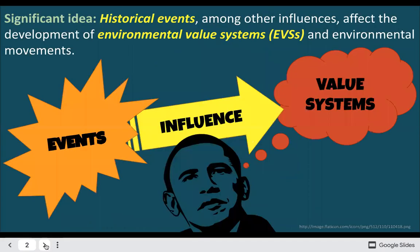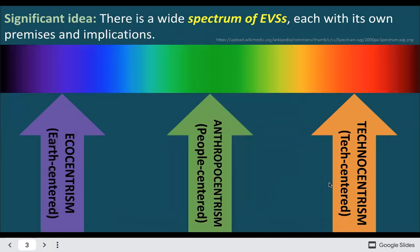So, environmental value systems. There are a lot of influences that go into what value systems people have. Many of these often tend to be historical events, and that will influence the way you think. The three major environmental value systems are ecocentric or earth-centered, anthropocentric or people-centered, and technocentric or technology-centered. These affect the way people view the world, but also the way that they would like to find solutions.